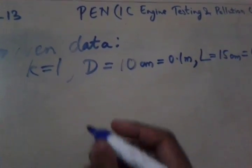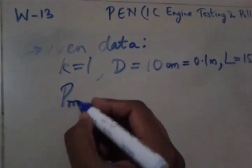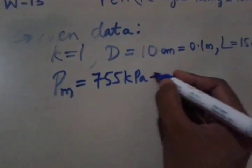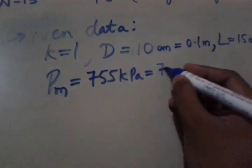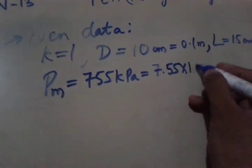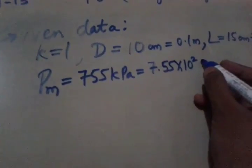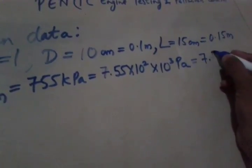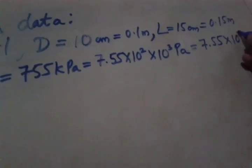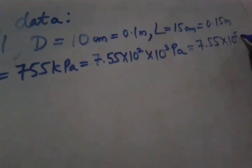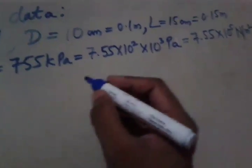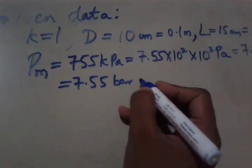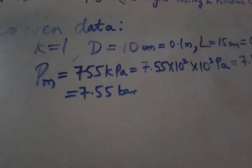Then we have been given indicated MEP that is PM is equal to 755 kPa. So we have to convert it into bar. So we can write this as 7.55 into 10 raised to 2, and since it is kPa, so we can write this as 10 raised to 3 Pa. So we can write this as 7.55 into 10 raised to 5 Newton per meter square, so we can write this as 7.55 bar.